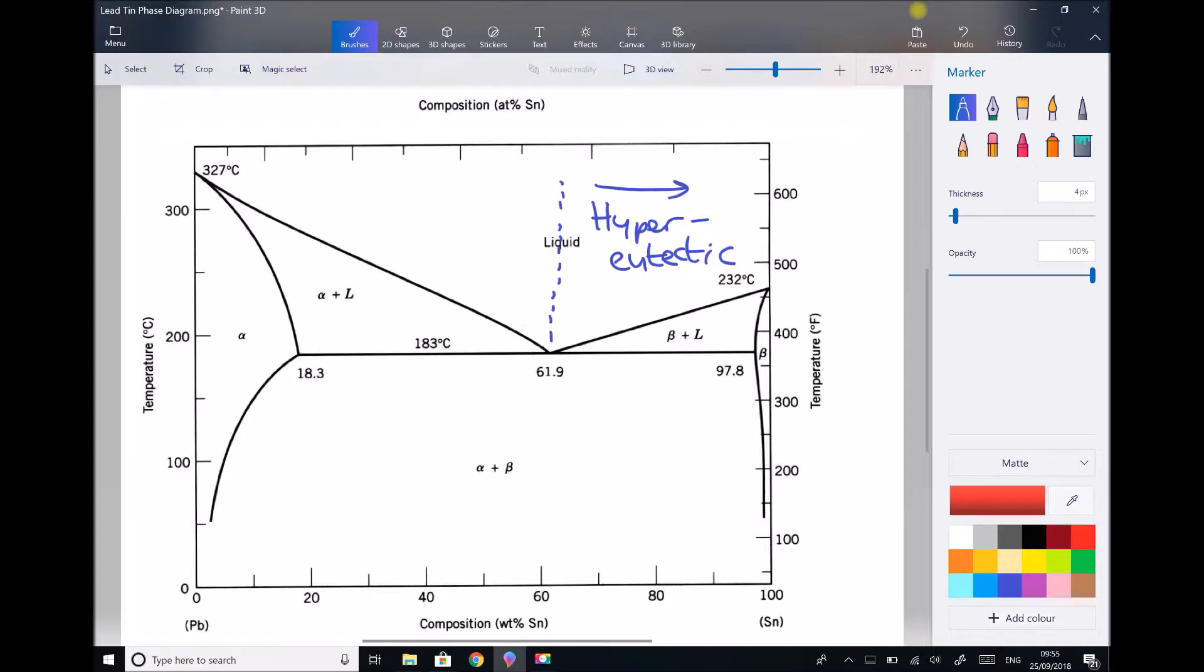If we have 61.9% we have a eutectic composition, and if we have less than 61.9% tin, we have hypo eutectic compositions.